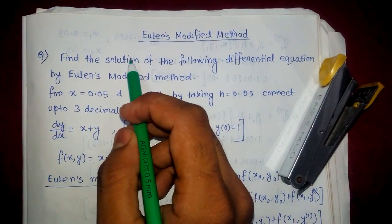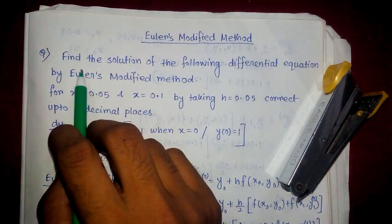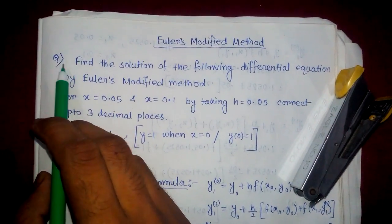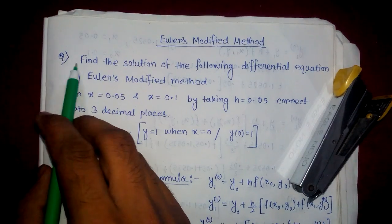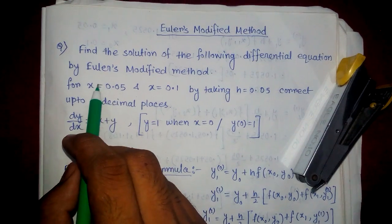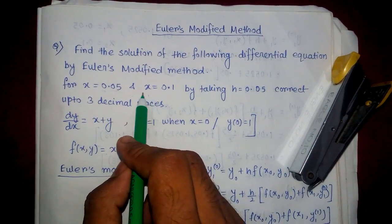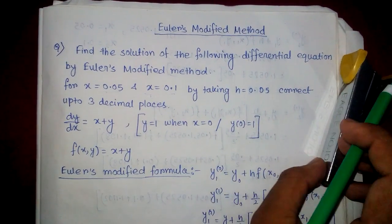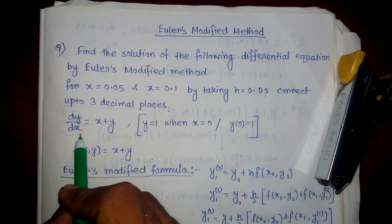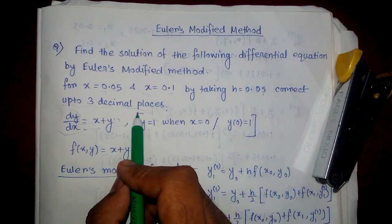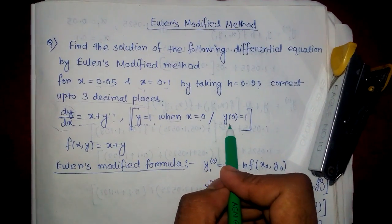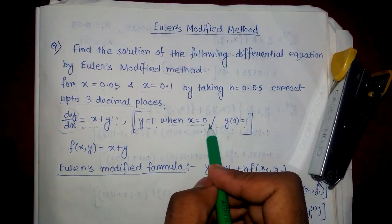Welcome to my channel Mishamun Mundol. Today I am going to discuss Euler's modified method. We will find the solution of the following differential equation by Euler's modified method for x equals 0.05 and x equals 0.1, taking h equals 0.05, correct up to three decimal places. The equation is dy/dx equals x plus y and the initial condition is y equals 1 when x equals 0.